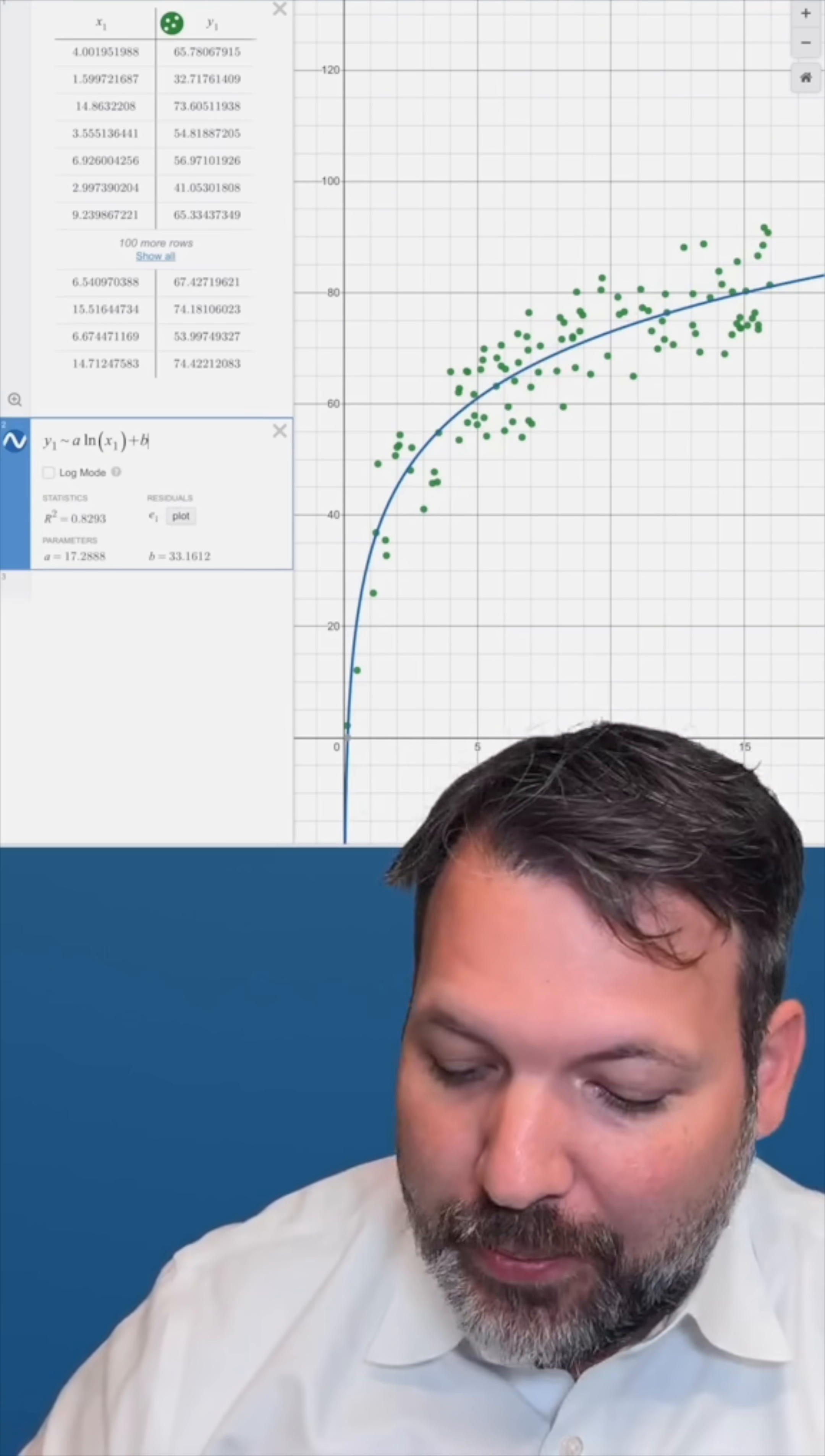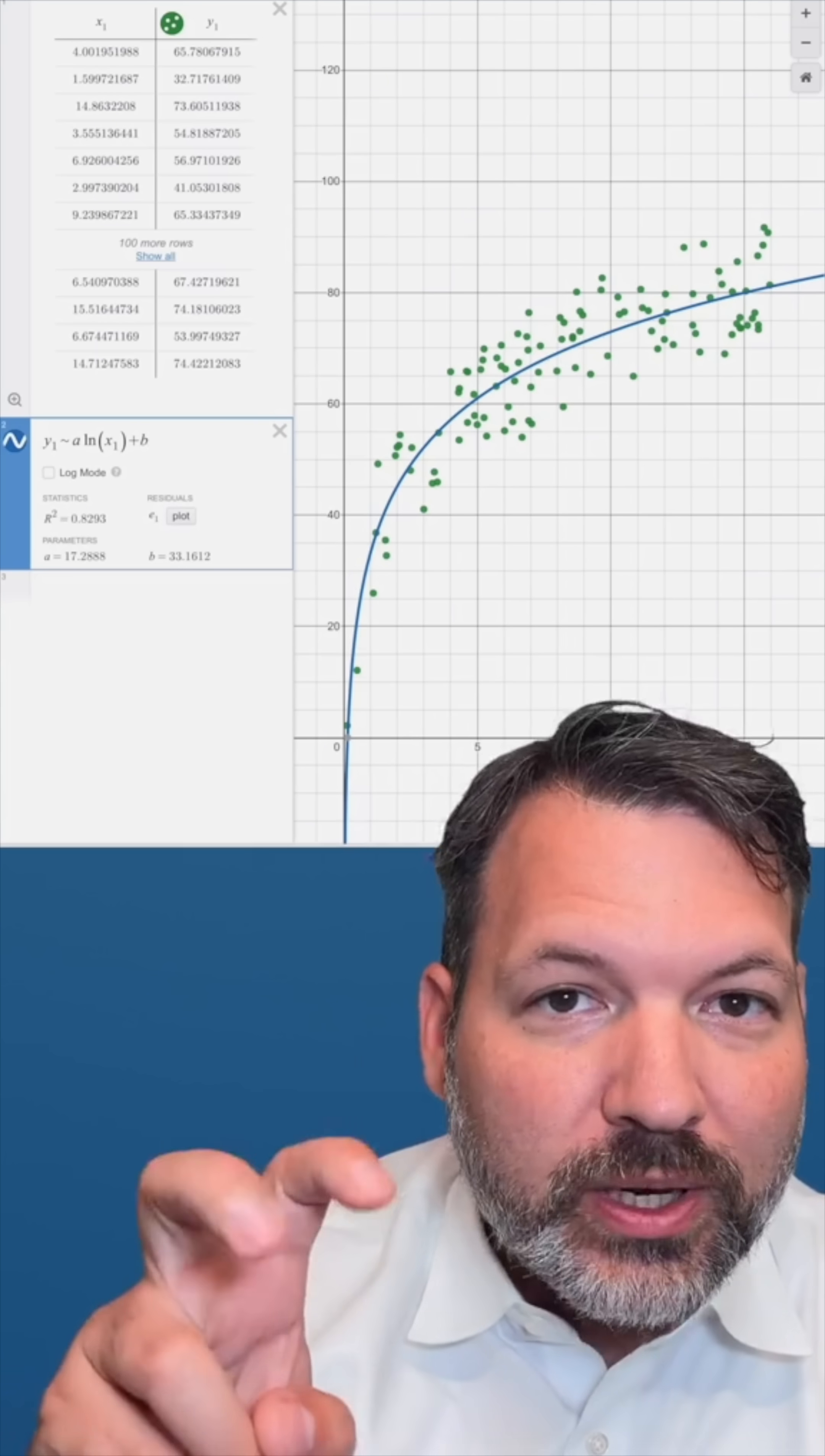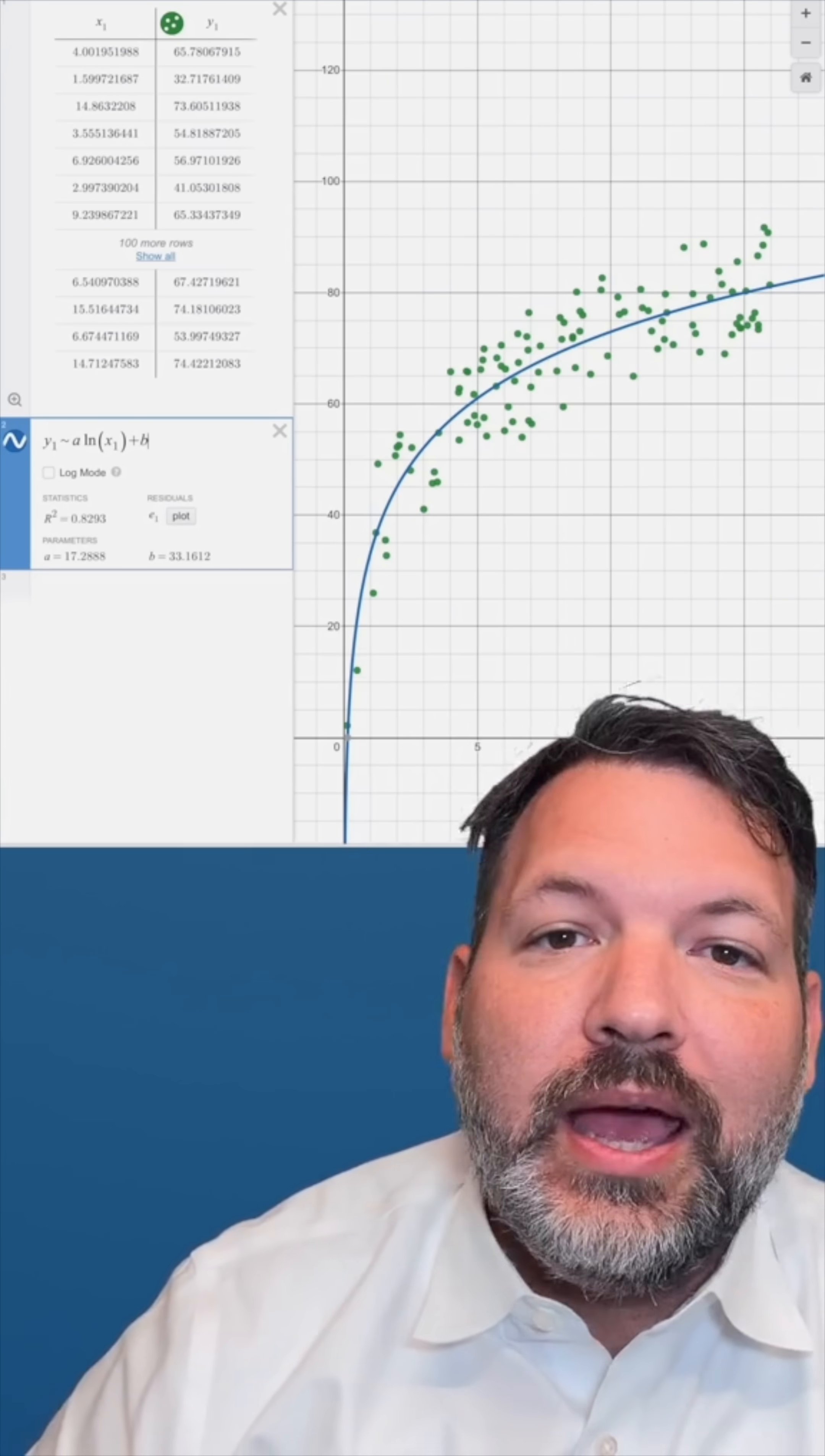A logarithmic curve with parameters of 17 and 33. That is, roughly, if you wanted to find your dog's age in human years, you would take the logarithm of the dog's age, multiply by 17, and then add 33.